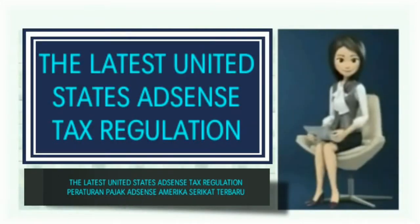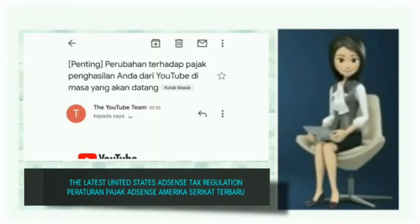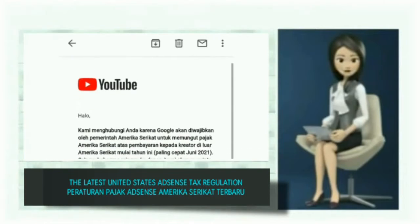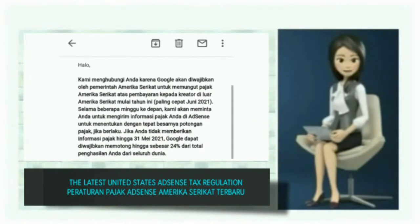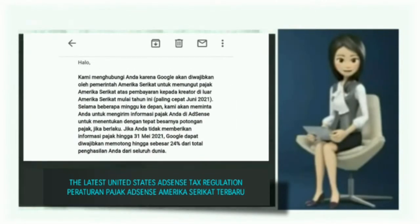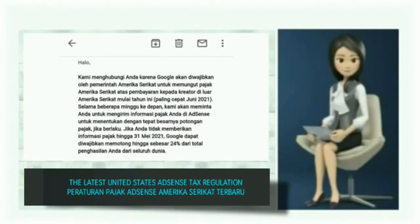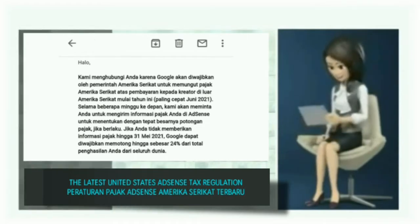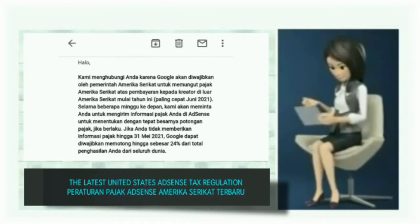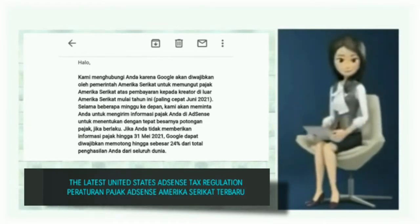The Latest United States Access Tax Regulation. Hi, we're getting in touch as Google will be required to deduct U.S. taxes from payments to creators outside the United States by the end of this year, as early as June 2021. Over the next few weeks, we'll ask you to submit your tax information in AdSense to determine the exact amount of tax to withhold, if any.